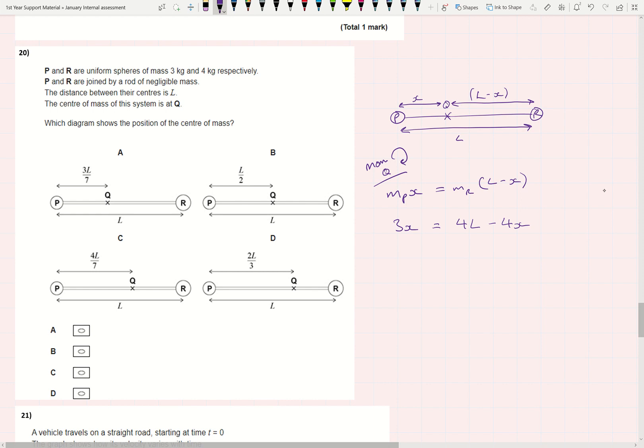Then I'm going to put my X's on one side. If I move my minus 4X to the other side, I get plus 7X equals 4L. Then to find X, divide both sides by 7, I get 4L over 7.